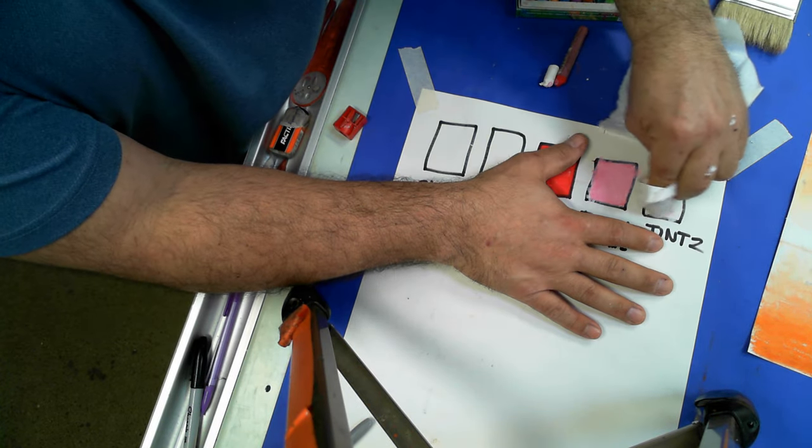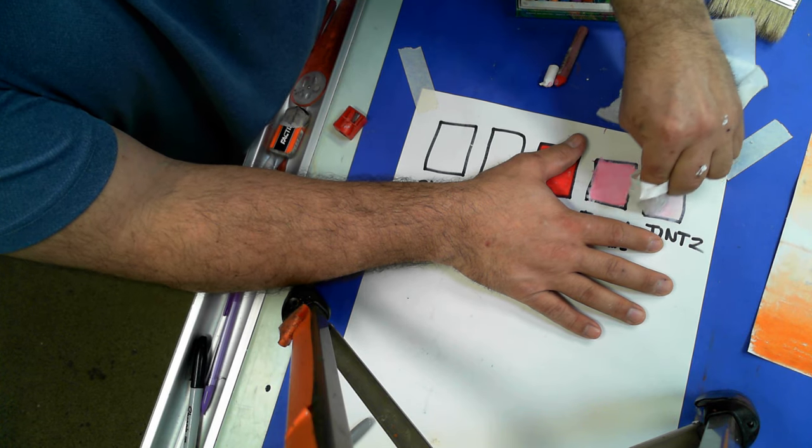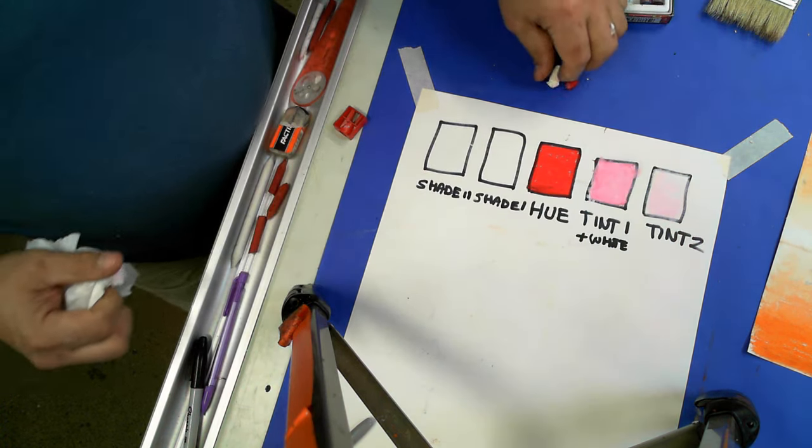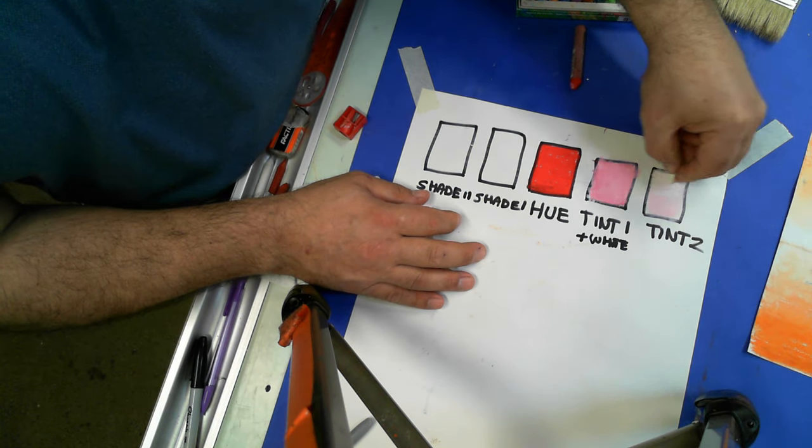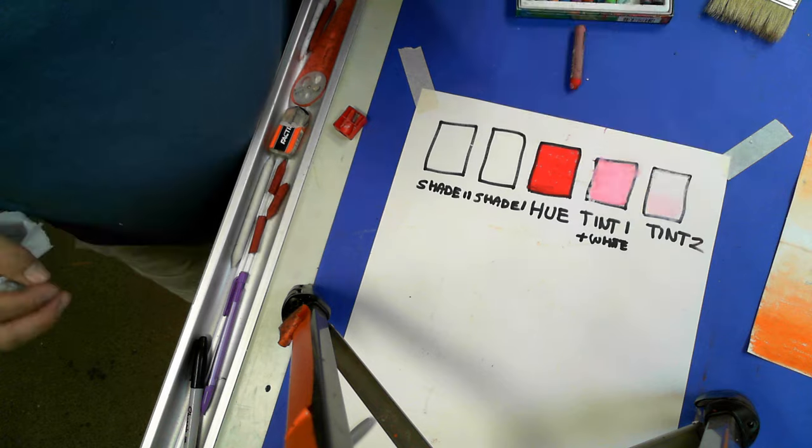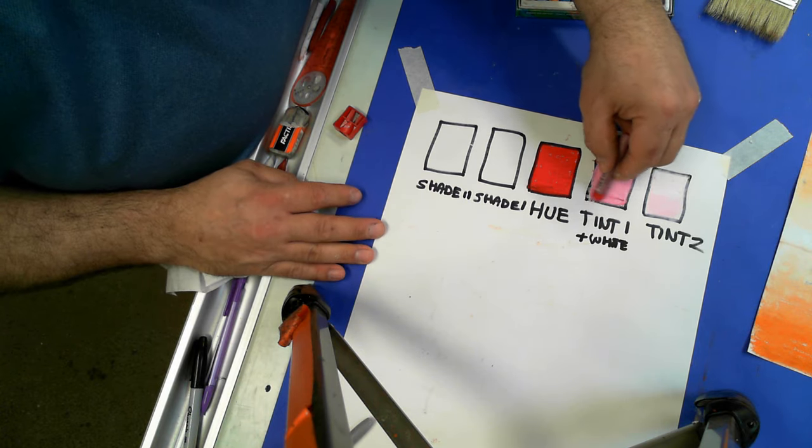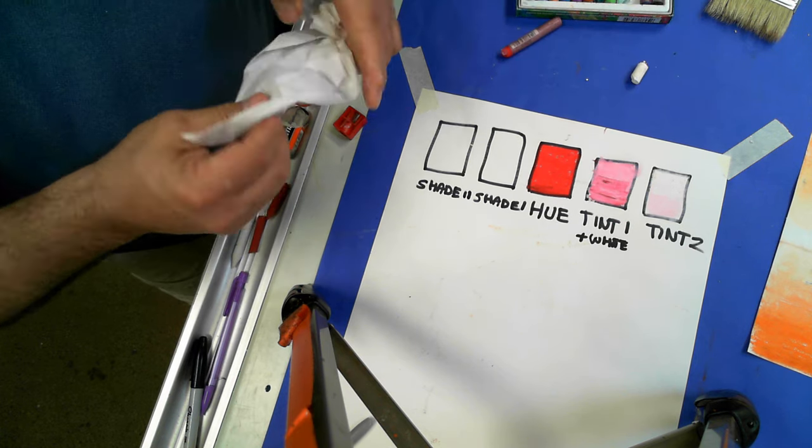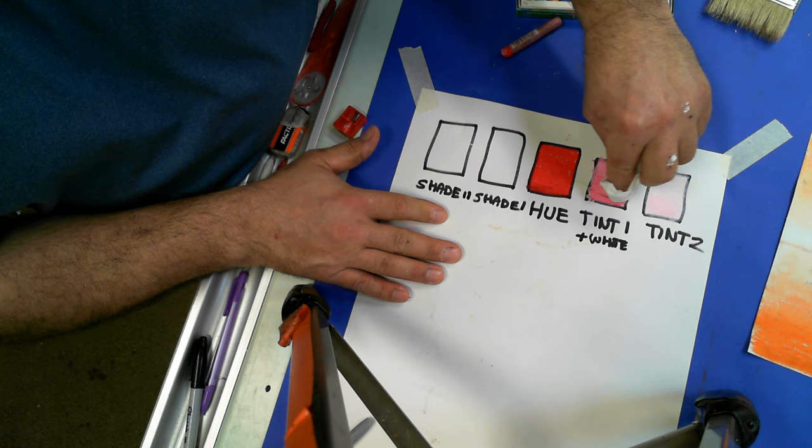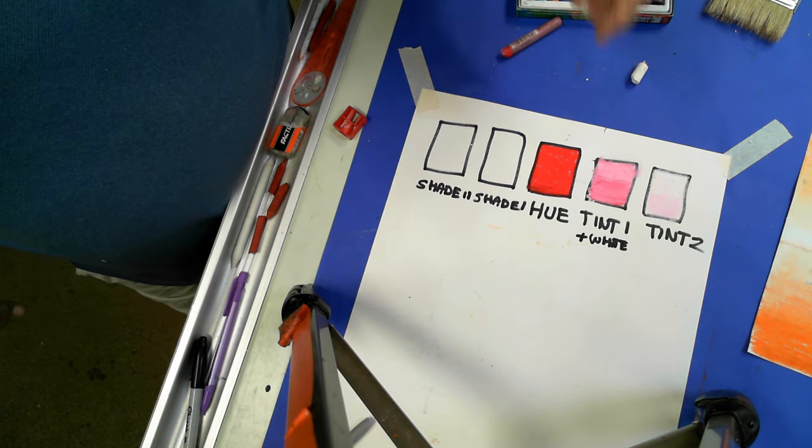And then that residue is going to go on to tint number two. And I could add white and make it really light like that, or I could leave it that tint. And I would say that that's pretty dark, but I could go and add a little bit more of the red. And I'm not going to go the whole way. And I can create four.